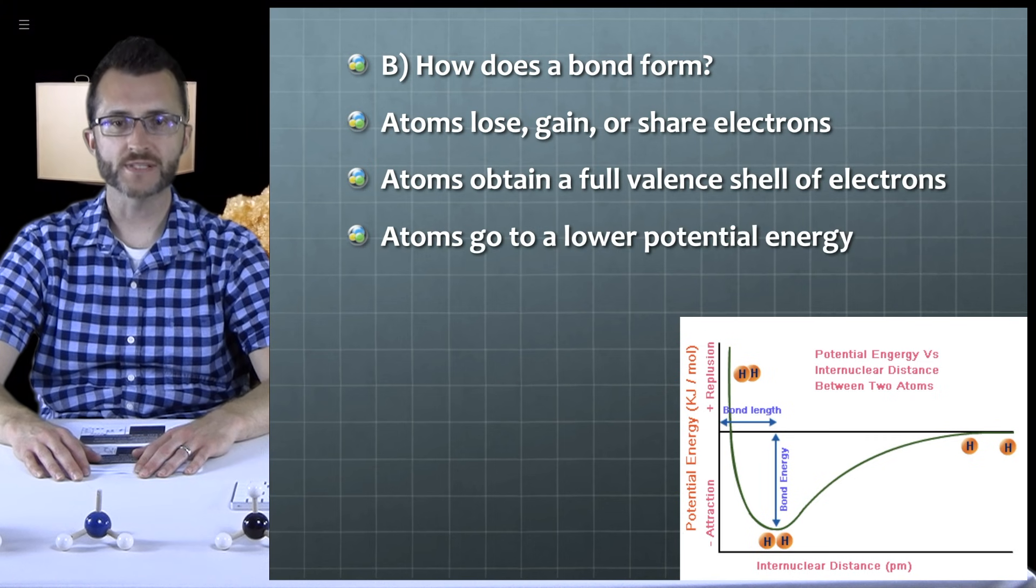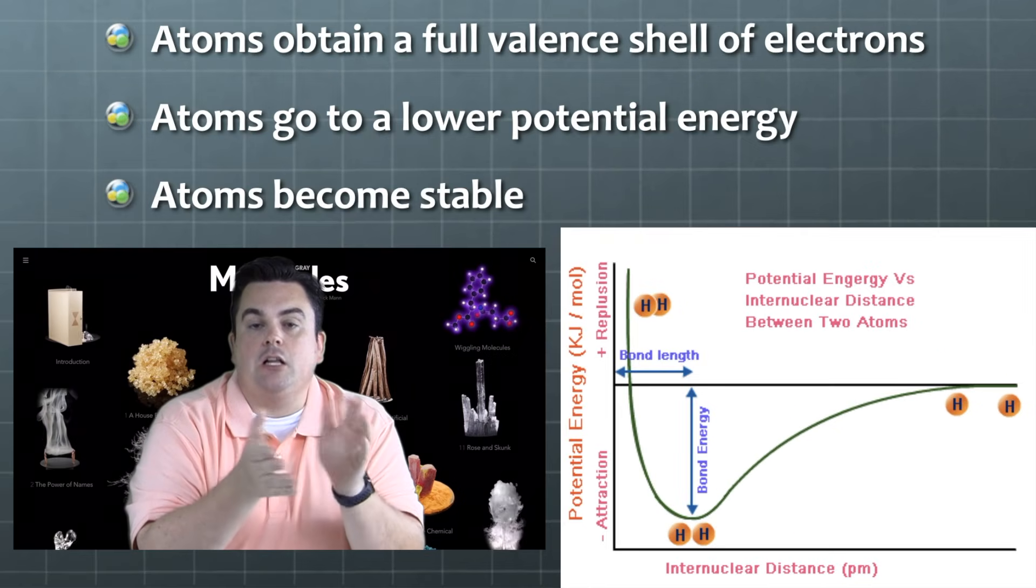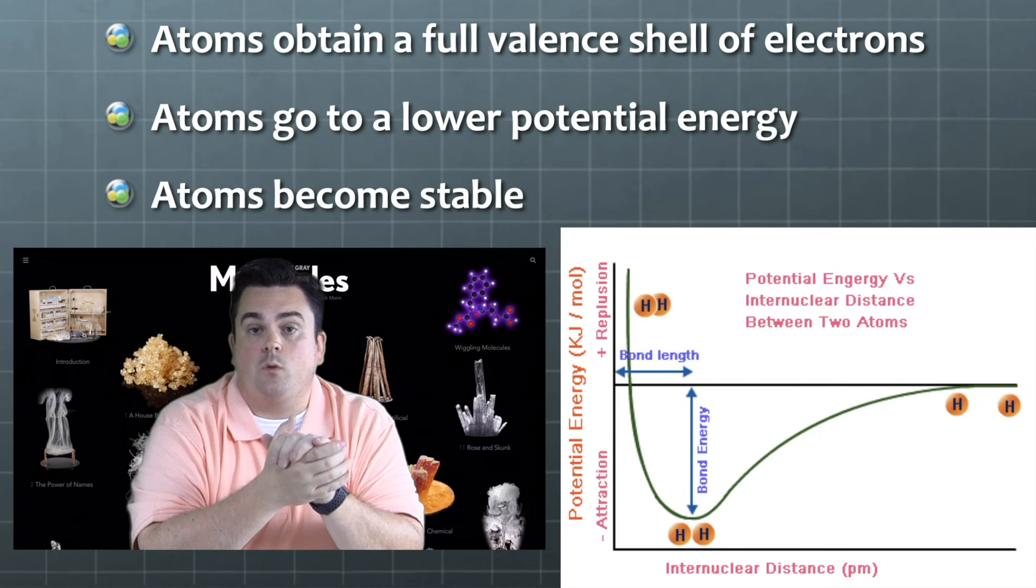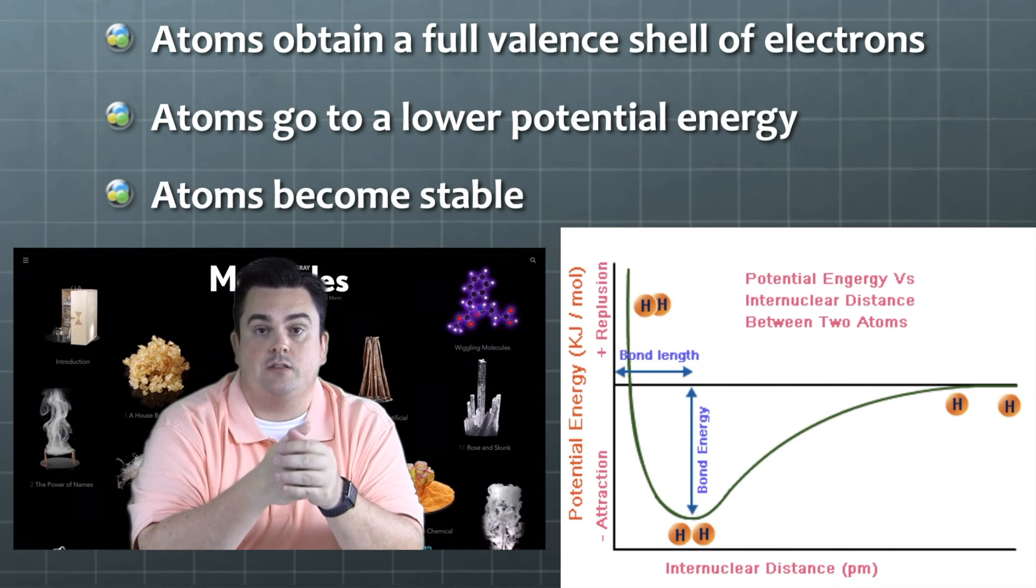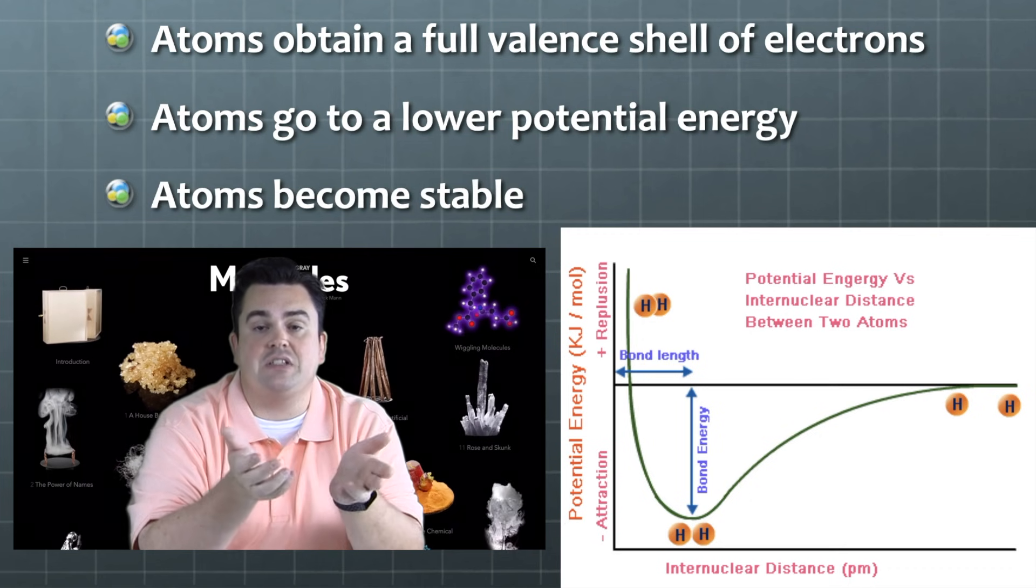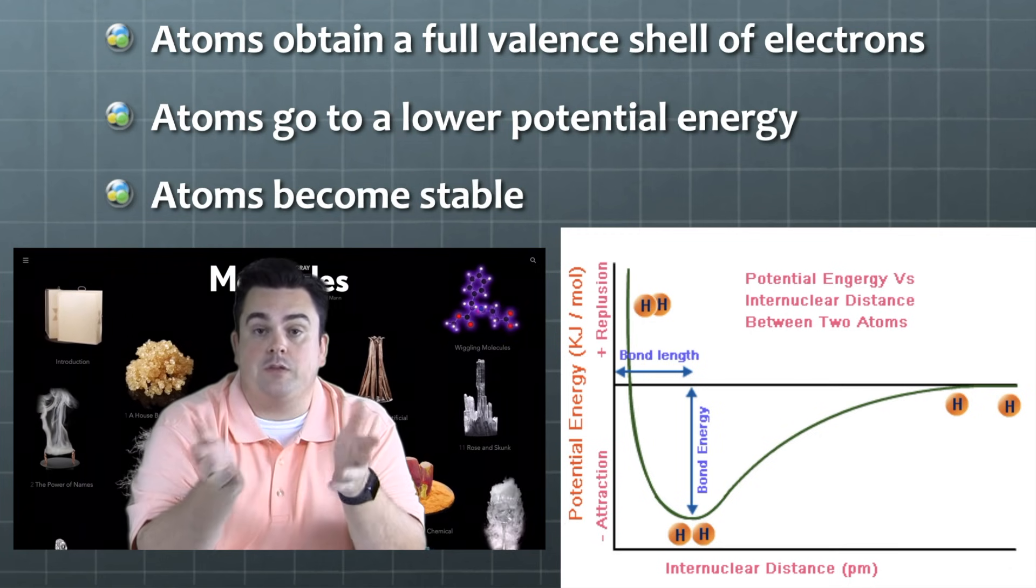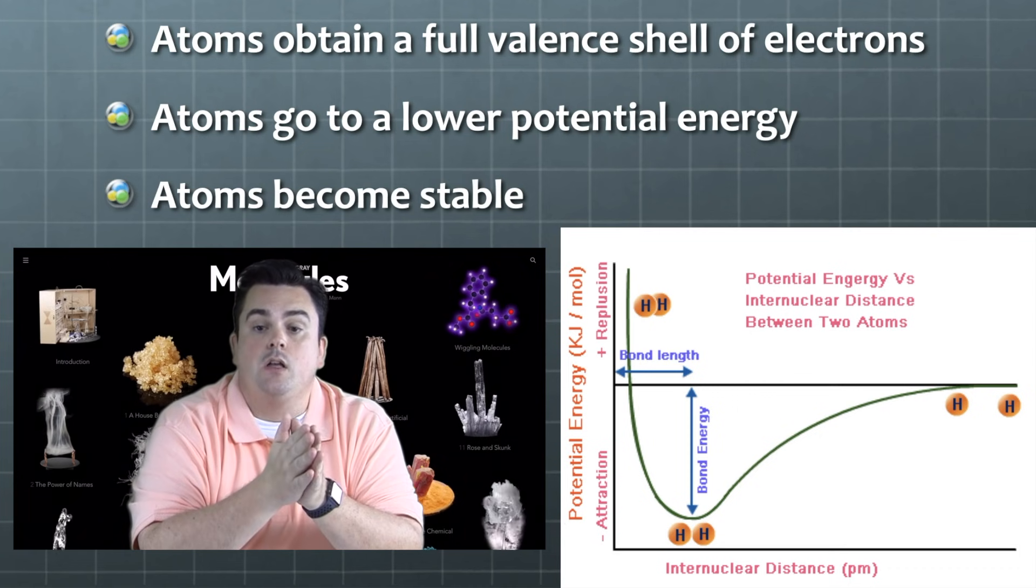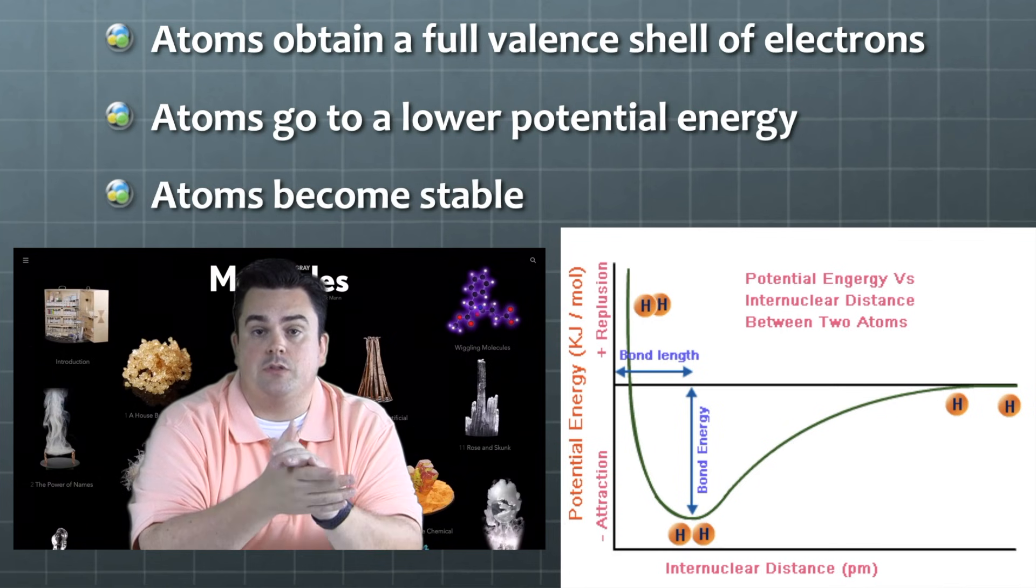Atoms go to a lower potential energy, and atoms become stable. So if you take a look at our diagram here, we have potential energy on the y-axis, and we have internuclear distance on the x-axis. Now, internuclear distance is just the distance between two nuclei. So the way we follow this particular graph is to go from right back to left.